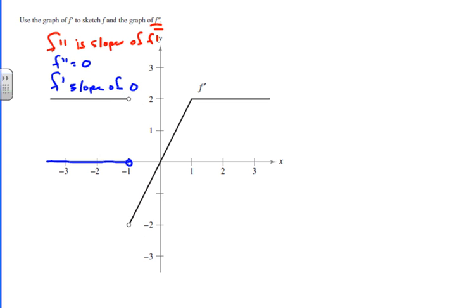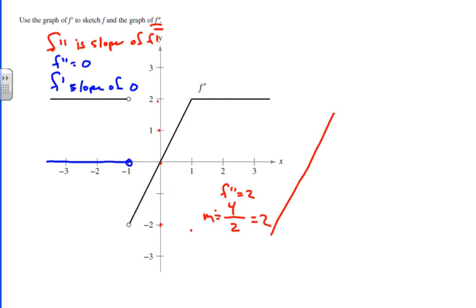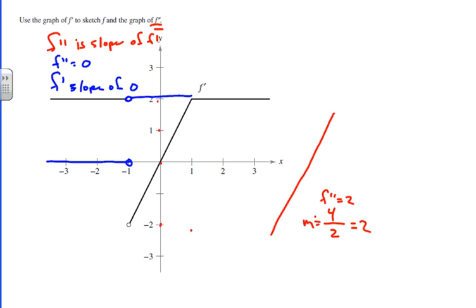We then look at the next part and see a straight line. The slope of that line is rise of 4 over run of 2, giving a slope of 2. So f double prime equals a constant 2 on the interval from negative 1 to 1. We draw a horizontal line at y equals 2 on that interval.